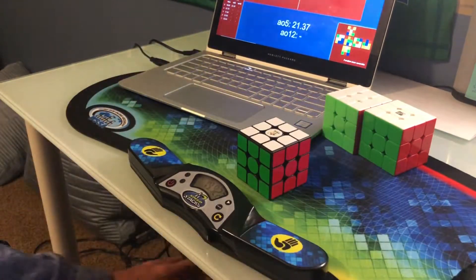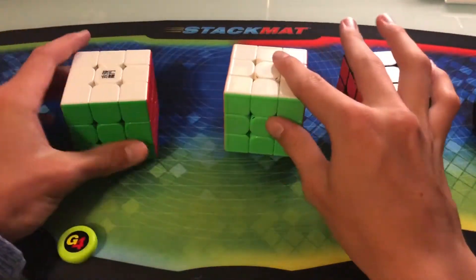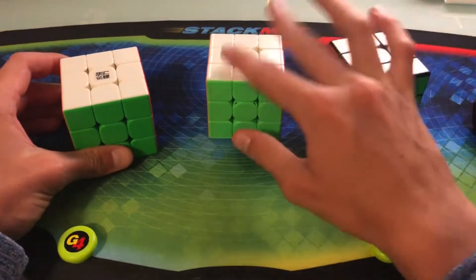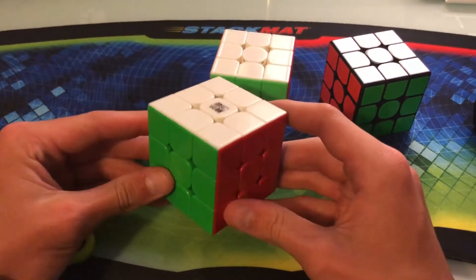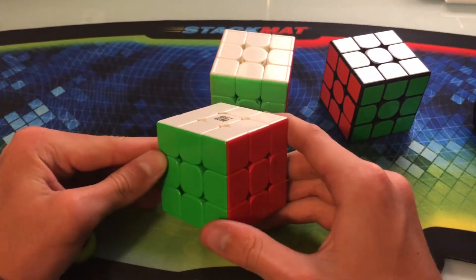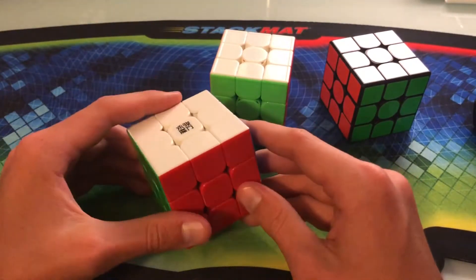So interesting results there. So now on to the results of this experiment. In first place was the YJ Yulong V2-M with an average of 5 of 18.43 seconds. And this was actually the $12 speed cube, which is kind of interesting if you think about it.